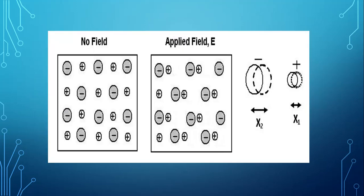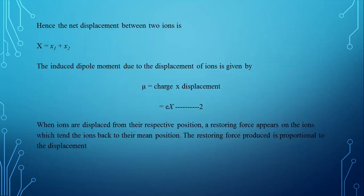This figure shows ionic polarization taking place in an ionic crystal. Without the field, the ions are in their respective positions. On the application of the field, the positive ion moves some distance x1 and the negative ion moves some distance x2 in the opposite direction to the field. Hence, the net displacement between the two ions is capital X, which is equal to x1 plus x2.